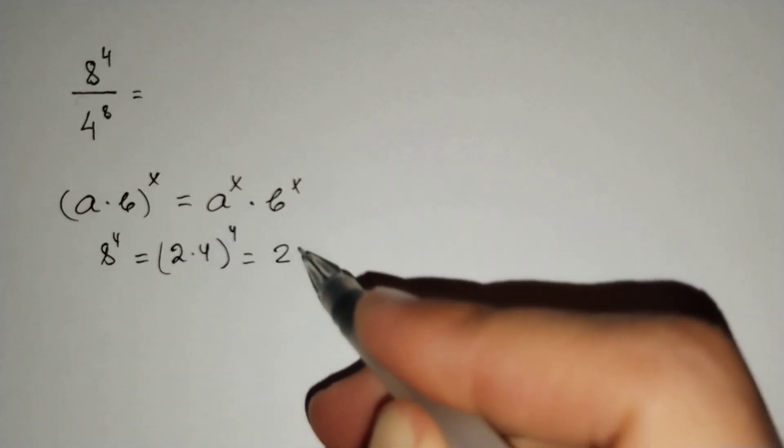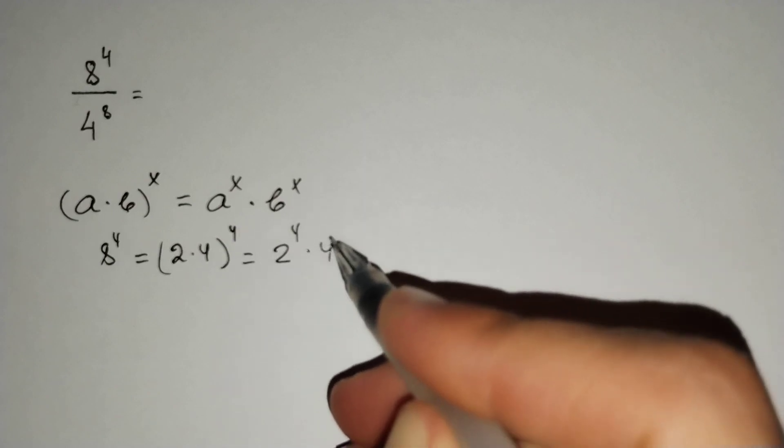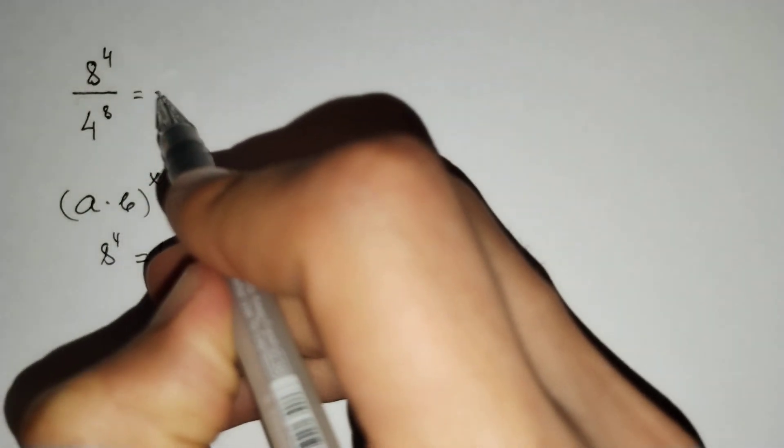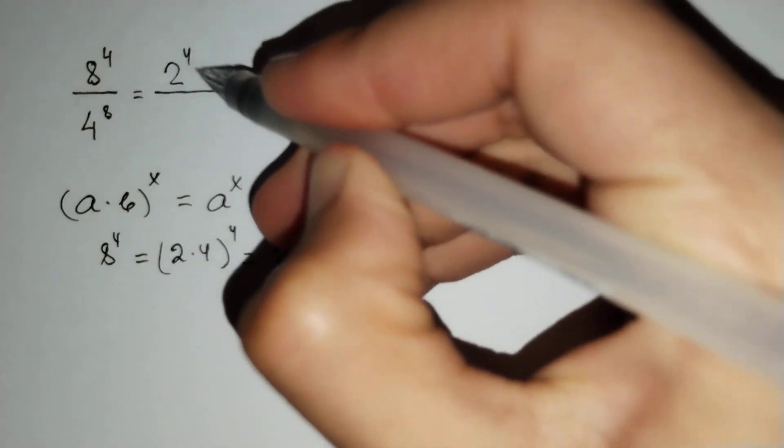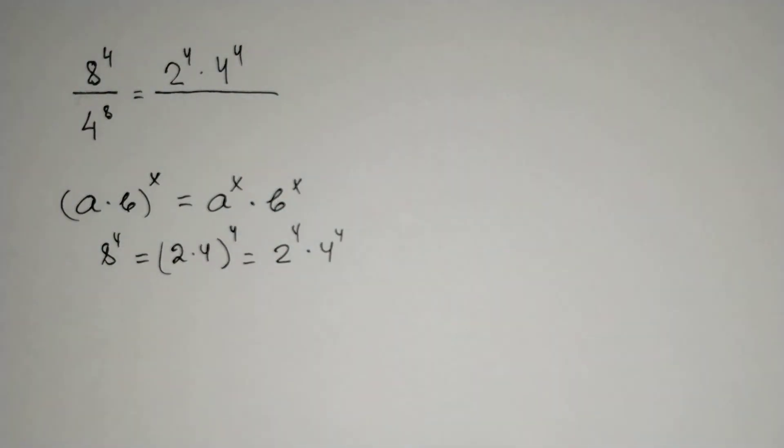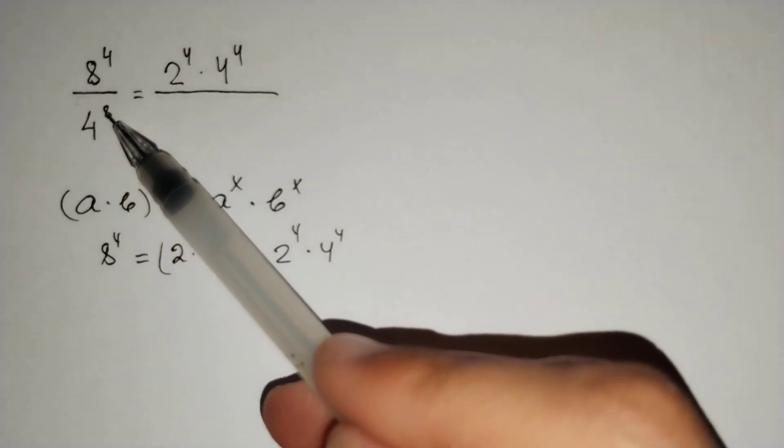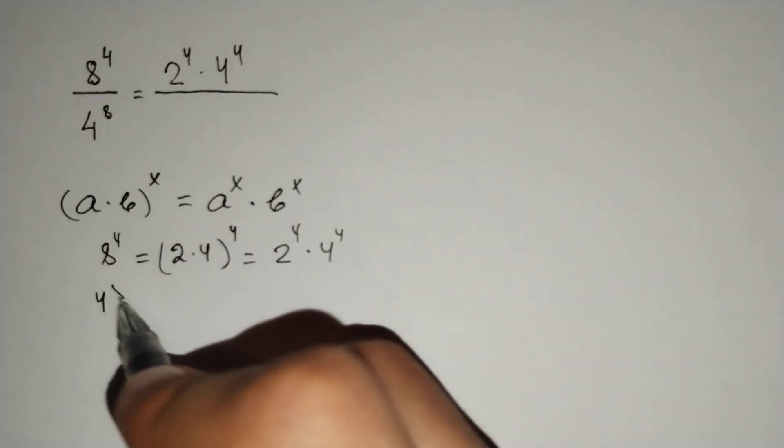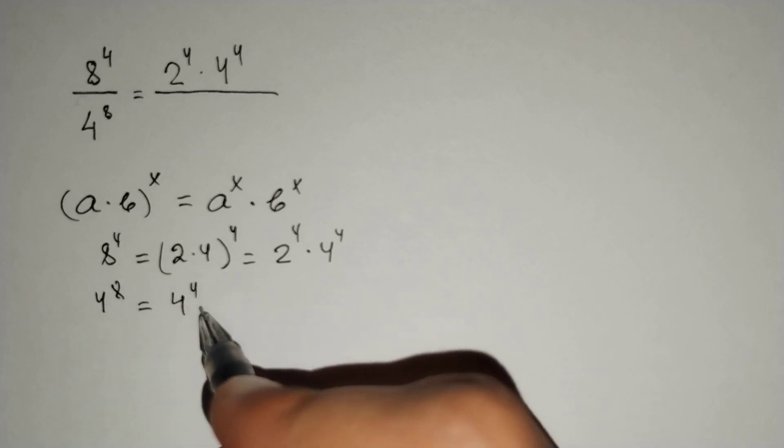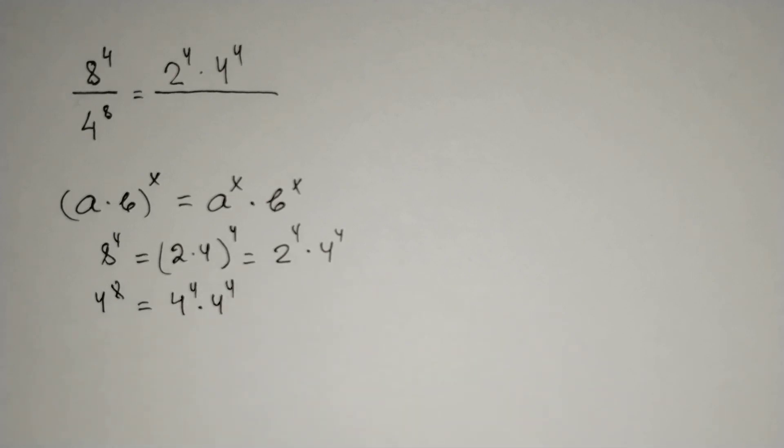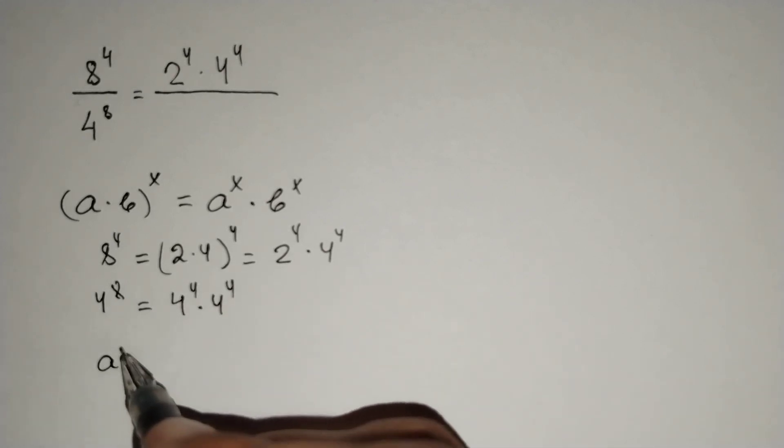Let's put it here: 2^4 · 4^4. Then 4^8 equals 4^4 · 4^4. Why? Because a^(x+y) equals a^x · a^y.